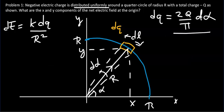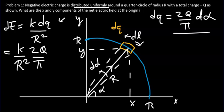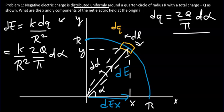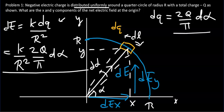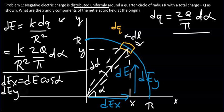Substituting this result into dE, we get dE = (k/r²)·(2Q/pi)·d_alpha. This field dE has two components: the x-component dEx going to the right and the y-component dEy going up. From trigonometry, dEx = dE·cos(alpha) and dEy = dE·sin(alpha).